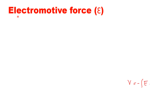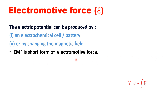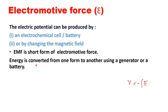First we discuss the electromotive force, which is denoted by scripted E. The electric potential can be produced by a battery, an electrochemical cell, or by changing the magnetic field. EMF is the short form of electromotive force, and energy is converted from one form to another using a generator or a battery. In a generator, mechanical energy is converted into electrical energy; in a battery or cell, chemical energy is converted into electrical energy.